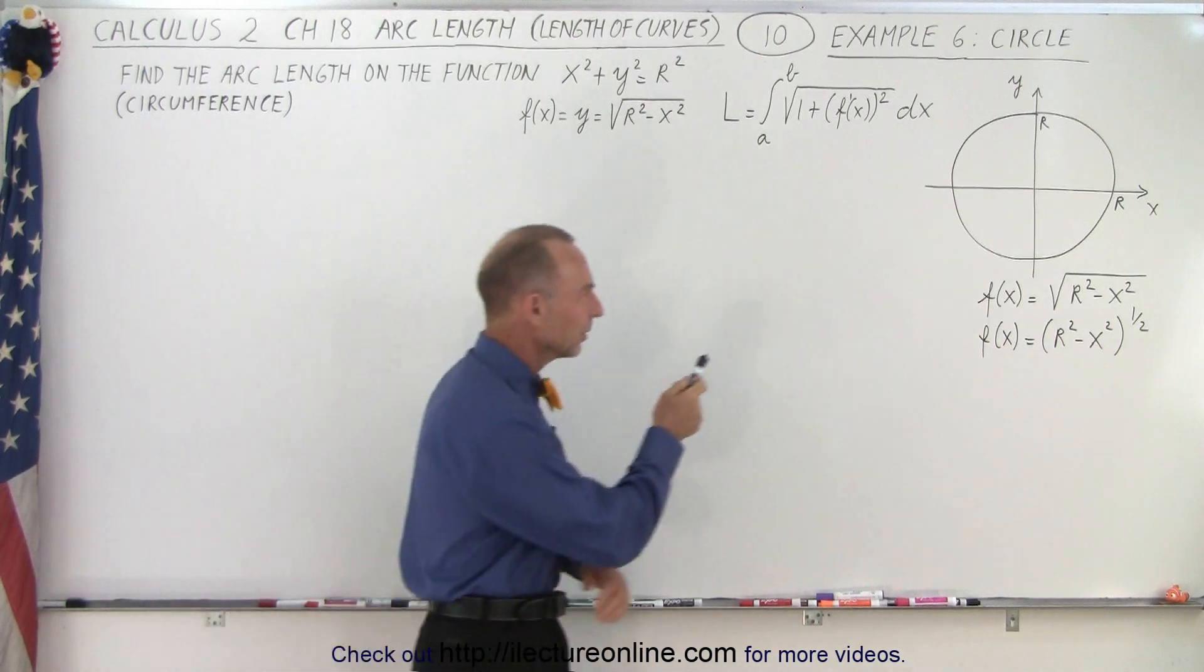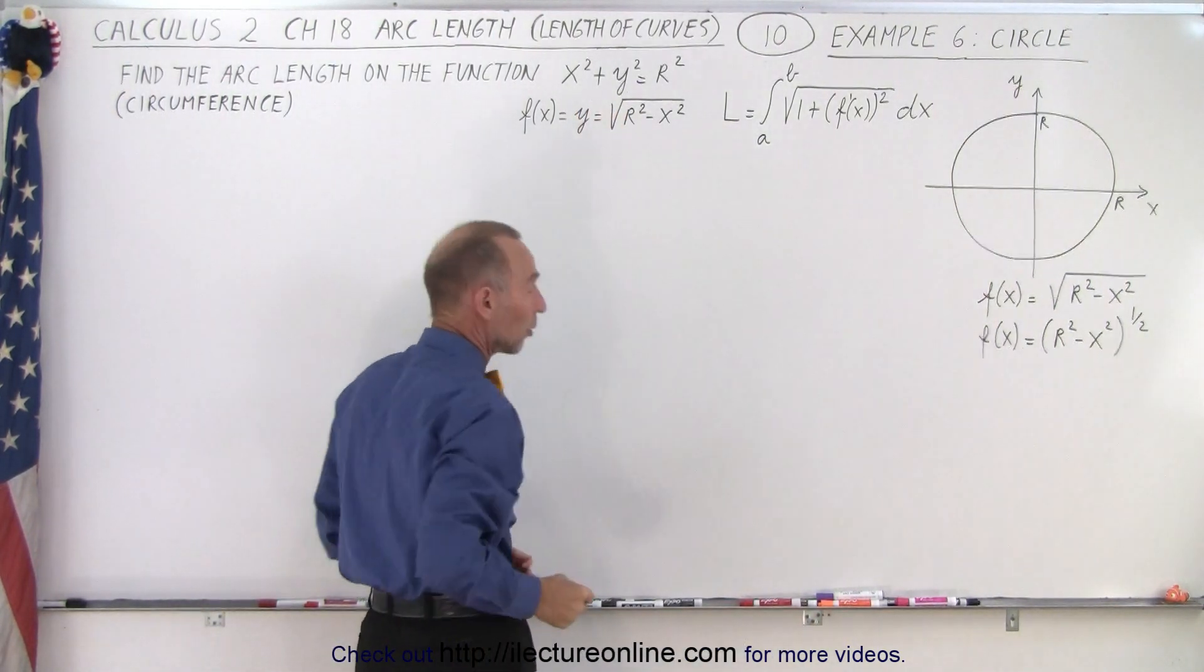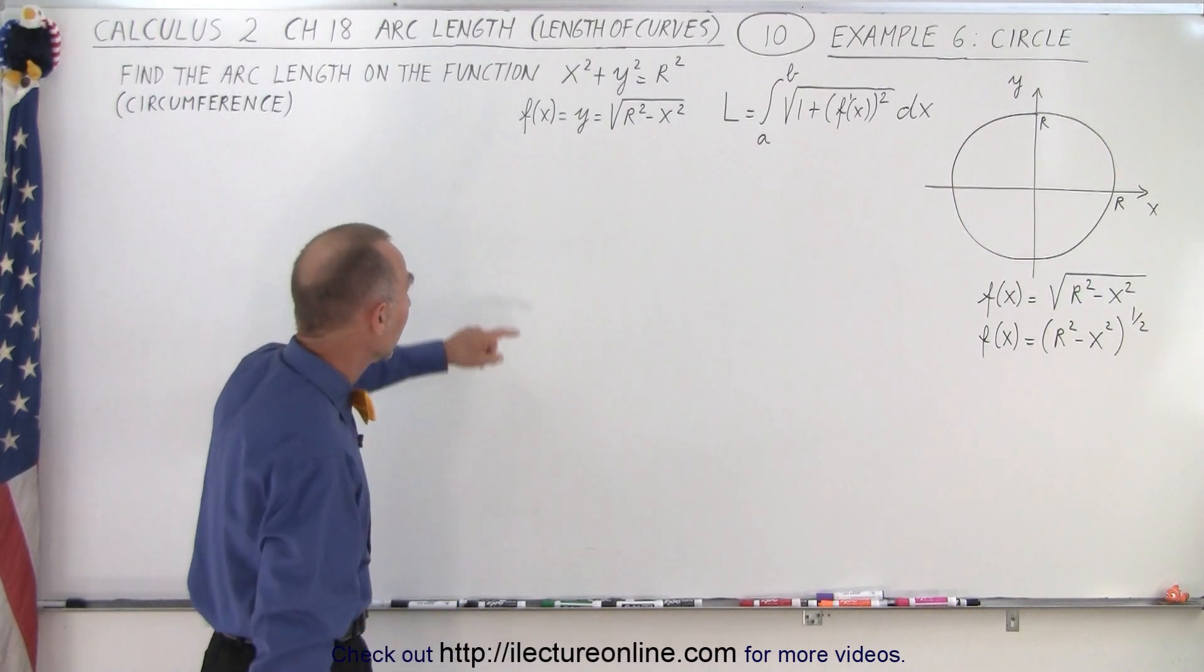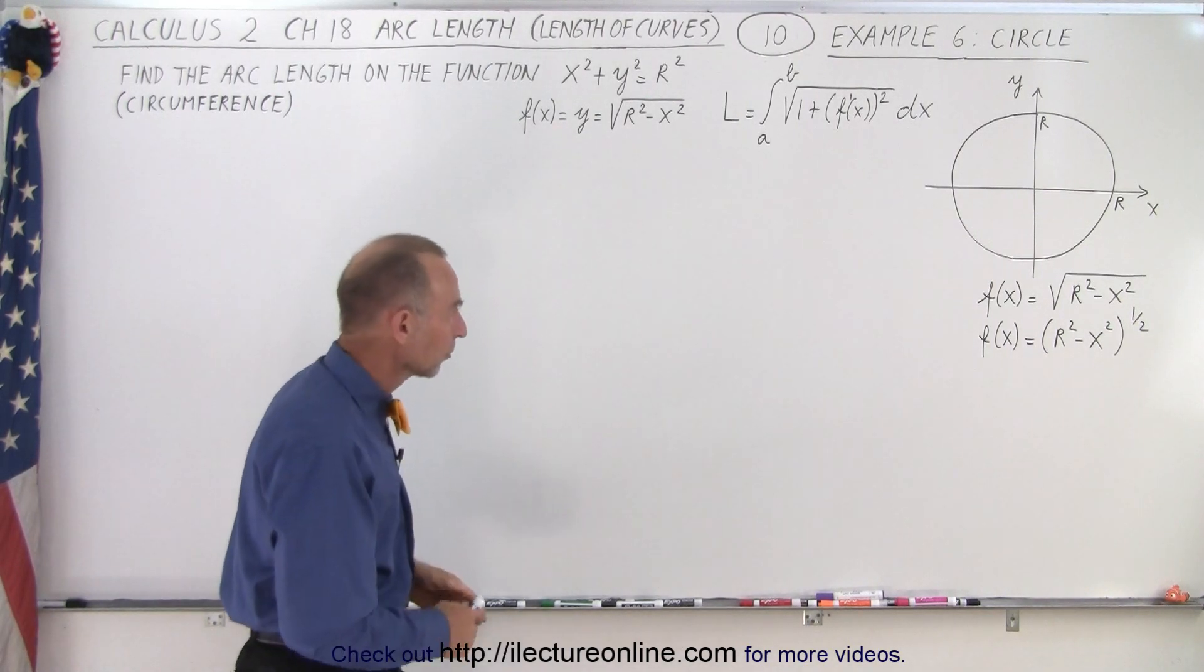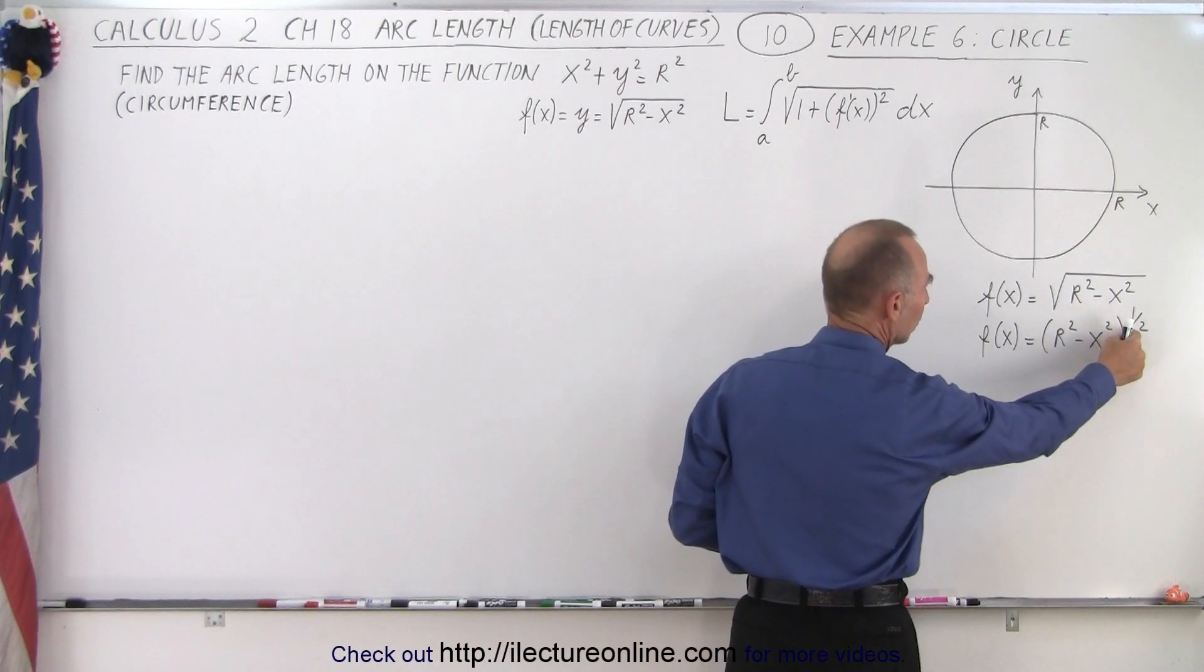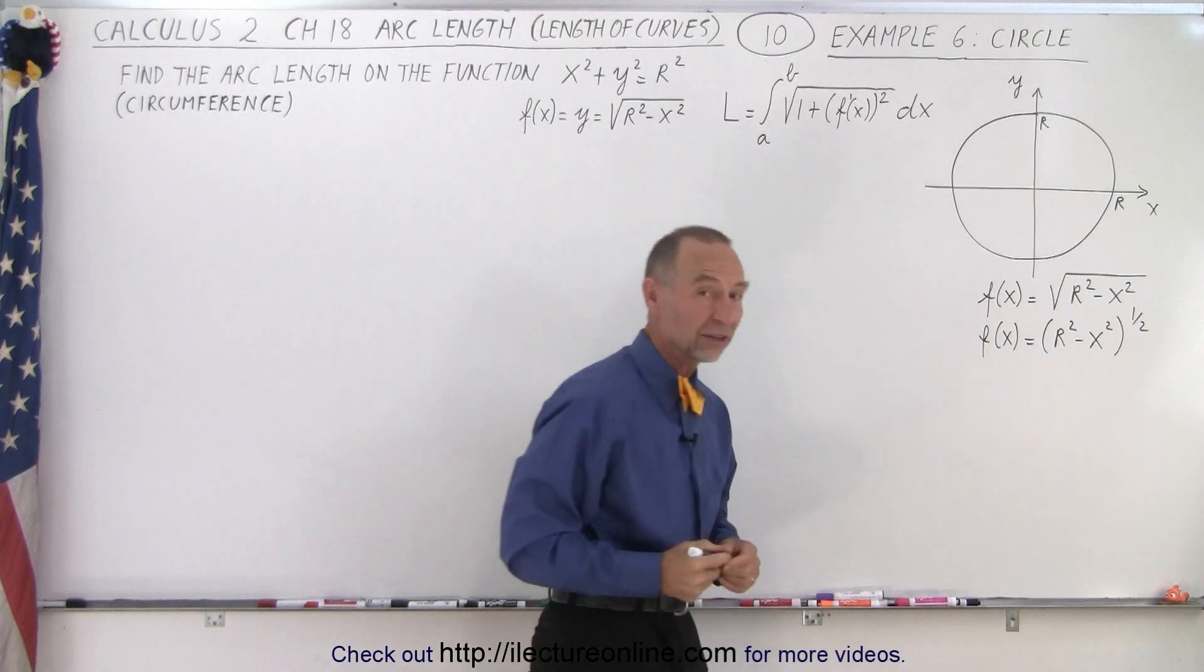So we have a circle here. Notice we have the equation x² + y² = r². So we use a general circle, r being the radius of the circle. And we're going to solve that for y in terms of x. So that looks like this. So here we have our function. We can also write it as the square root using exponentials of the quantity r² - x².